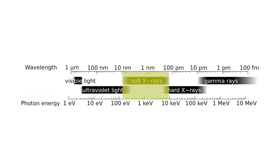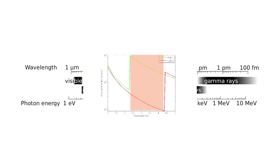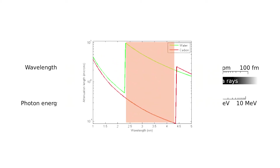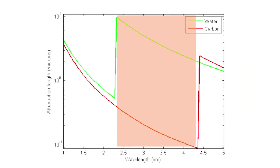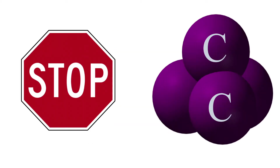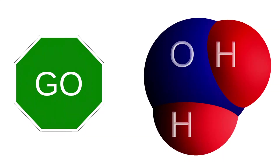Soft X-rays are less energetic than their hard counterparts. Soft X-rays are usable on cells due to an area known as the water window. This is a special region of radiation where carbon, just like the bone before, absorbs soft X-rays, whereas water, like the tissue, transmits soft X-rays.